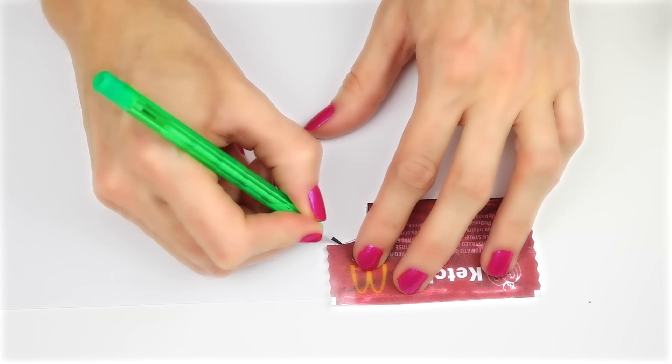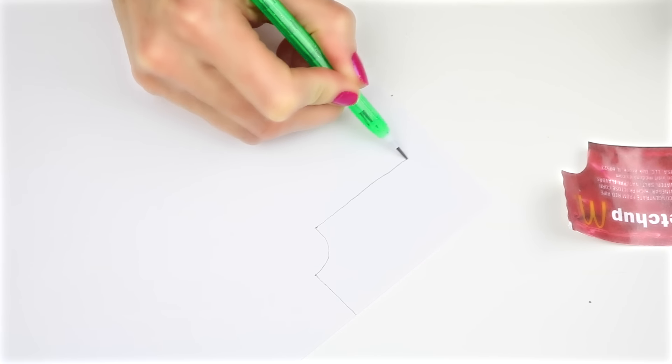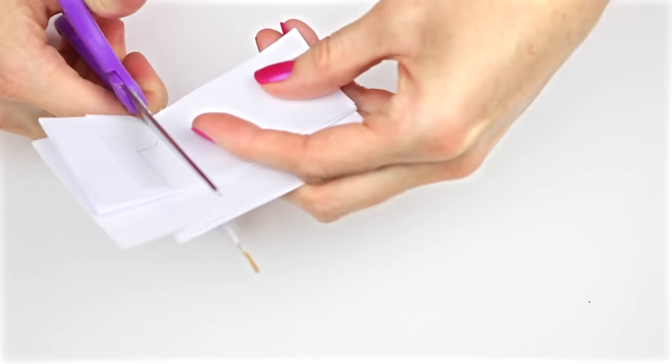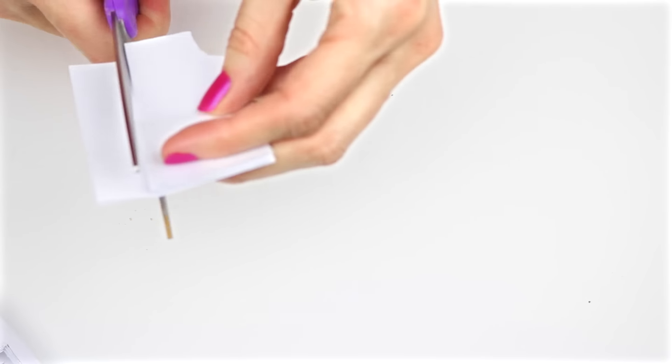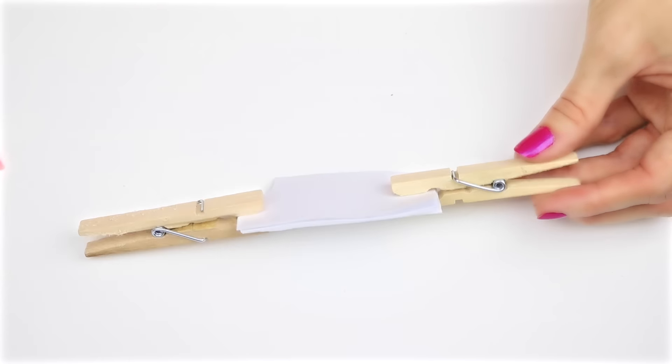To make the paper for the notebook, trace around the ketchup. I then folded a sheet of paper and cut it out slightly inside the lines so it wouldn't hang over. Gather all the pieces of paper for the notebook.